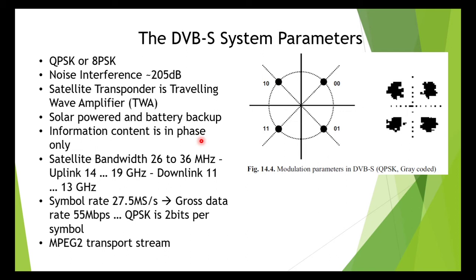In the satellite transmission of analog TV, frequency modulation was used instead of amplitude modulation. For this reason, a satellite channel of a direct broadcasting satellite usually has a width of 26 to 36 megahertz.